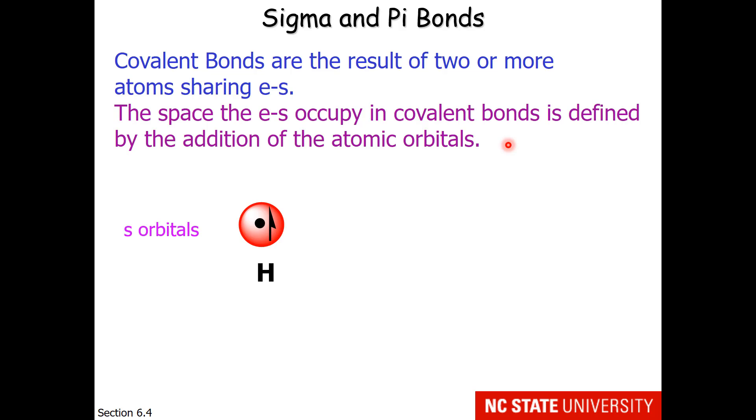Let's consider the simple example. Hydrogen has one proton and one electron. The nucleus is represented by this black dot and the electron probability region is represented by this red circle. If two hydrogen atoms come together to make H2, the space the electrons occupy is from the addition of the two s orbitals. Here are the two hydrogen nuclei and the electron probability region is mostly between the two nuclei.